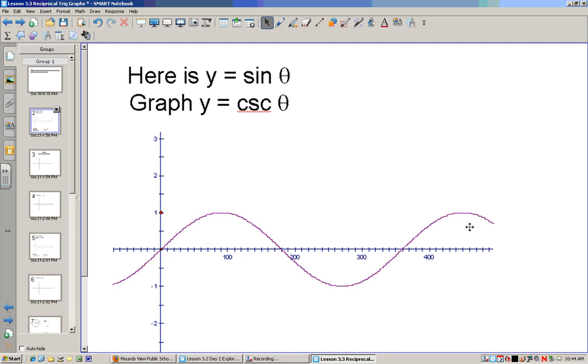So if we have the sine curve, we have to think about what we know about the relationship between these. And we know cosecant is 1 over sine of theta. Now what we know is 1 over 0 is undefined.